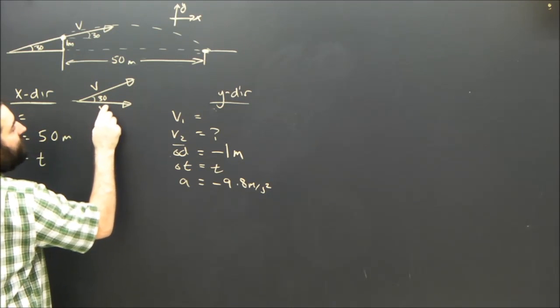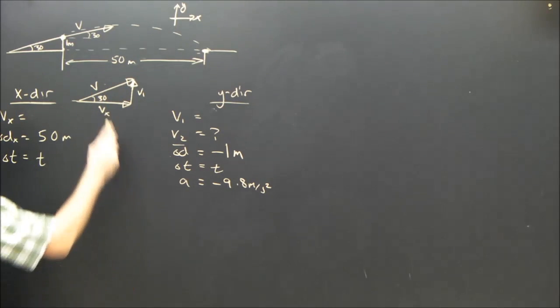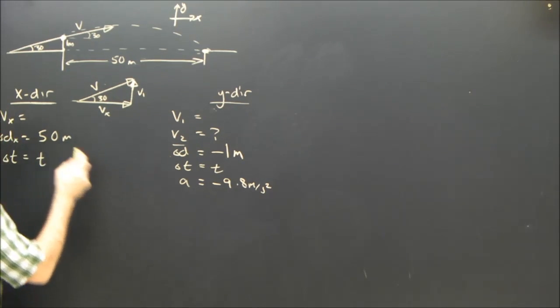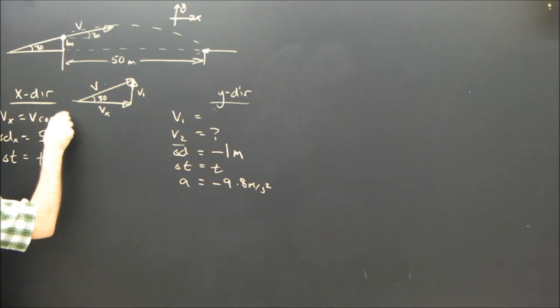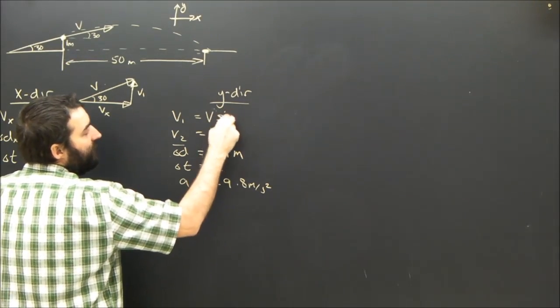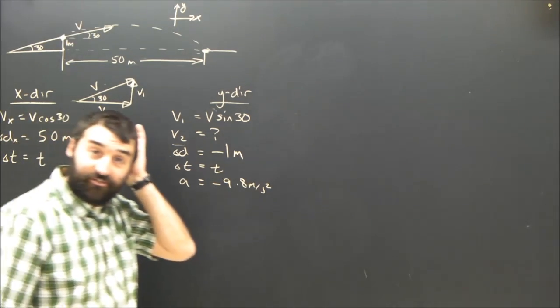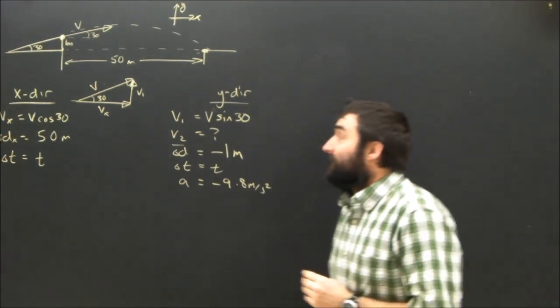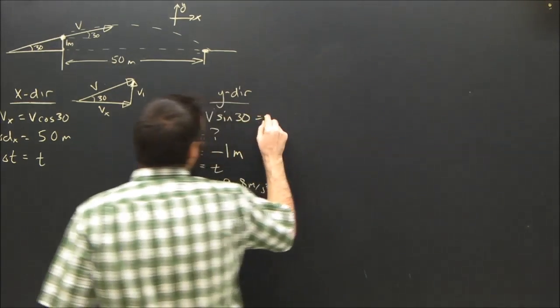We know the original velocity v at an angle of 30 degrees. So we know that vx plus v1 equals v. And we know the angle. We can see that vx is v cos 30. And we can see that v1 is v sine 30.